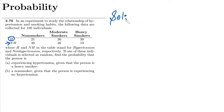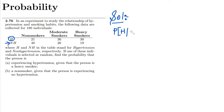All the given data has been laid out here. I have to find out the probability that the person has been experiencing hypertension given that the person is a heavy smoker.